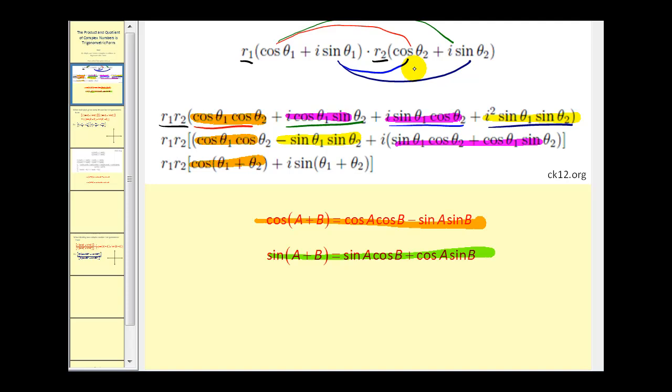So if we want to multiply two numbers together in trigonometric form, we just multiply r₁ times r₂, and multiply that by the cosine of the sum of the angles, plus i times the sine of the sum of the angles.